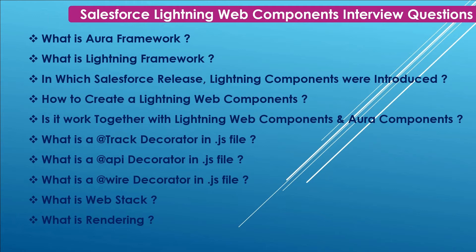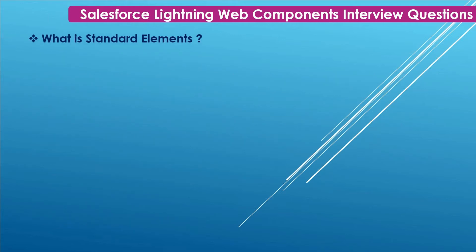Next: What is rendering? Rendering is the process of converting HTML tags to a meaningful, readable web page within the browser — this is called the rendering engine. Next: What is a standard element? The elements provided in the HTML library are called standard elements. We can also create custom elements as per the requirement, which won't be part of standard HTML.